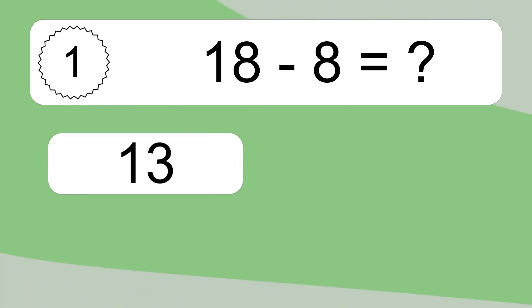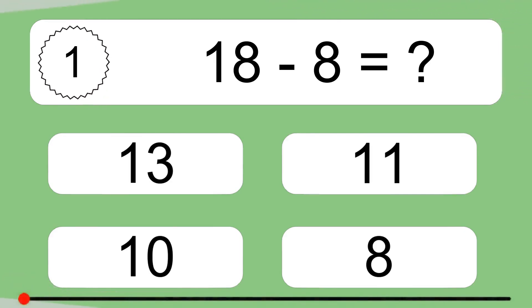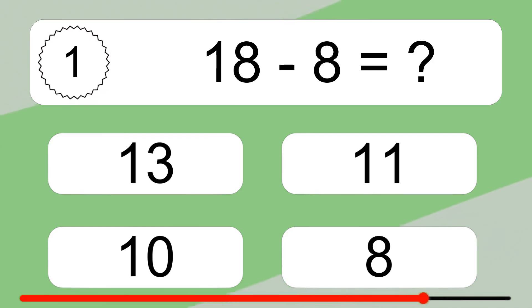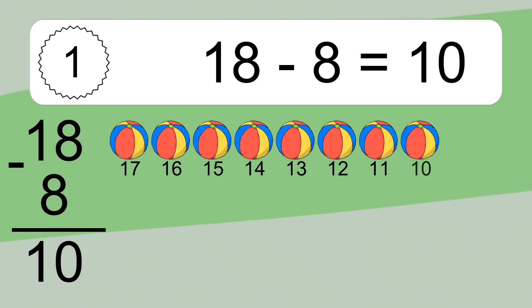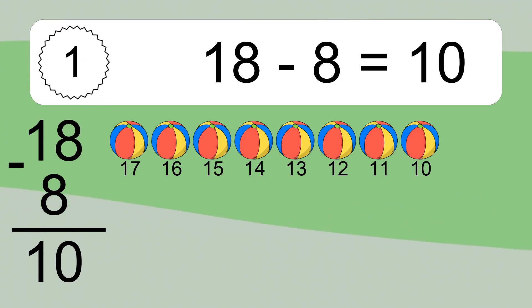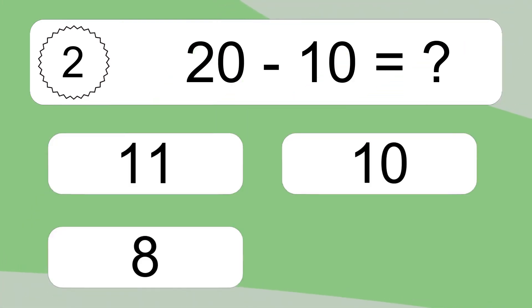18 minus 8 equals what? 18 minus 8 equals 10. Let's count it: 17, 16, 15, 14, 13, 12, 11, 10.